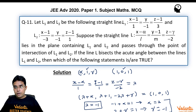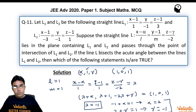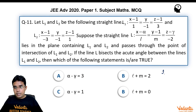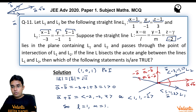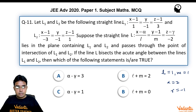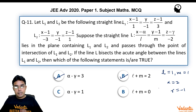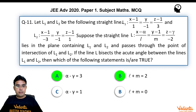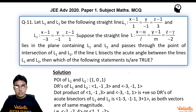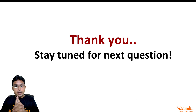So our results are: l = 1, m = 1, α = 2, γ = −1. Checking the options: α − γ = 2 − (−1) = 3, so option A is correct. l + m = 1 + 1 = 2, so option B is correct. Options requiring α − γ = 1 or l + m = 0 are incorrect. Therefore options A and B are correct. This completes the solution — thank you and stay tuned for the next question.